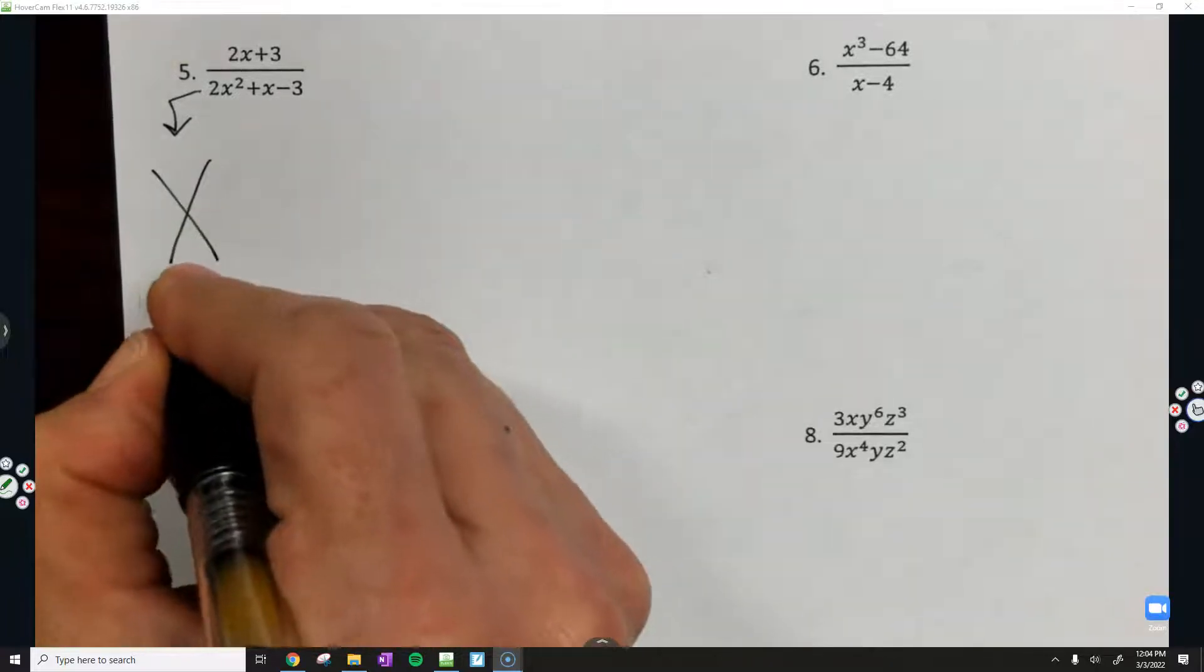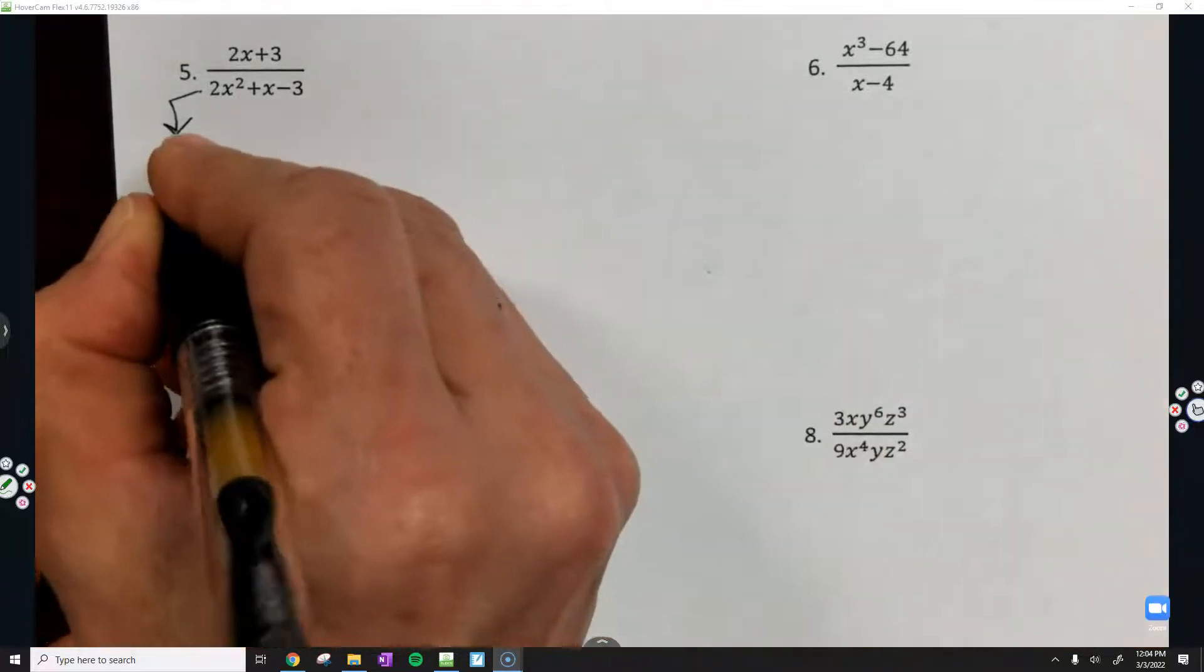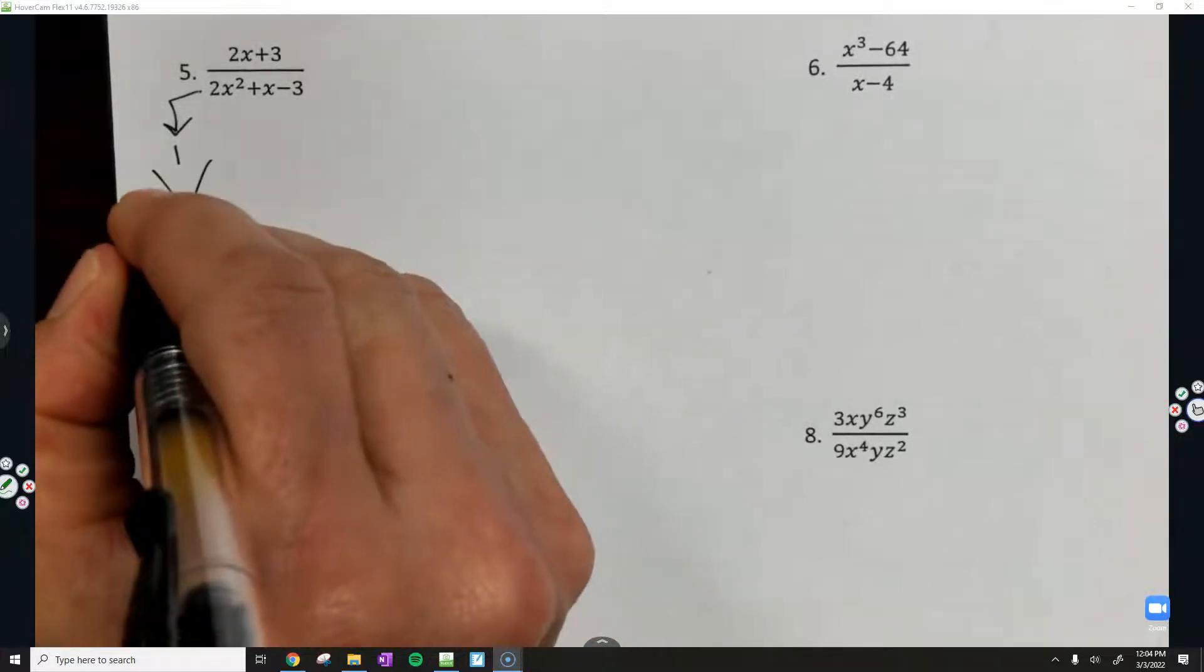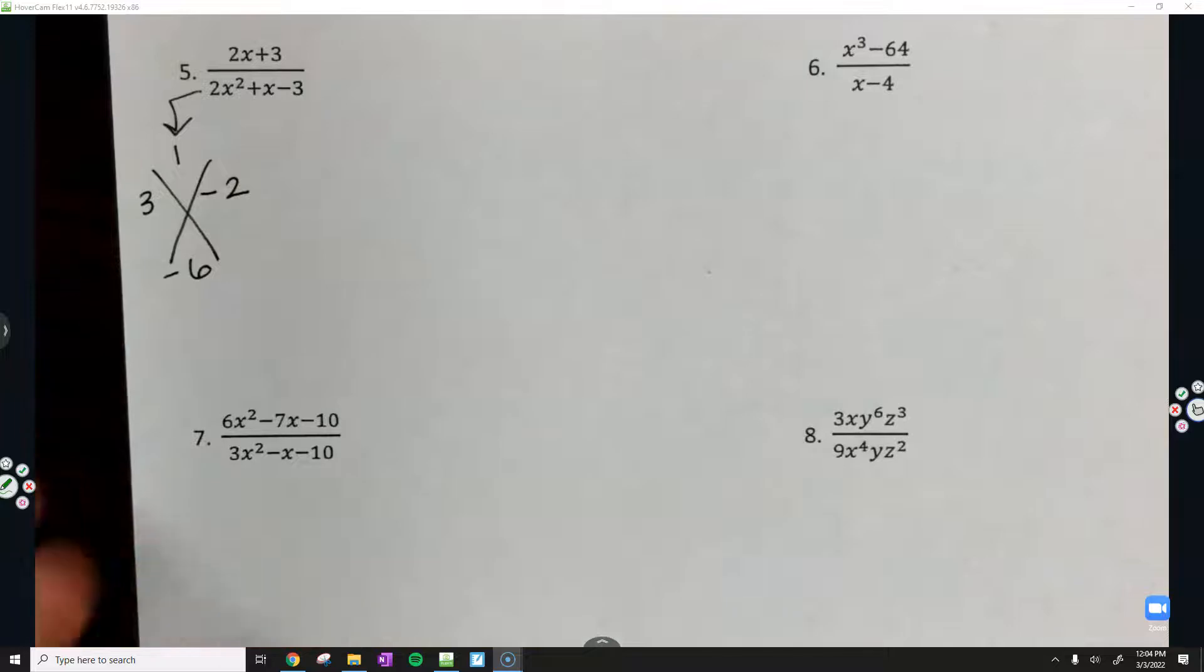I'm going to go ahead and multiply a times c, put that b value at the top, and numbers that multiply to a negative 6 but combine to make a positive 1 is going to be a 3 and a negative 2. And then don't forget, you've got to go back and slide or divide by the a value.